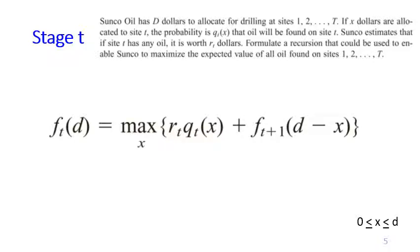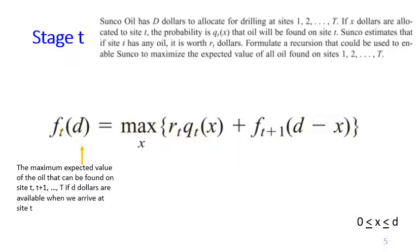Now let's move backward to stage small t, which is before the very last stage. We have F_{t,d} — the maximum expected value of the oil that can be found on sites t, t+1, up to big T, if D dollars are available when we arrive at site t. Because this is not the last stage, we will only spend X dollars, where X can be between zero and small d. We may spend zero at the site or spend everything we have.